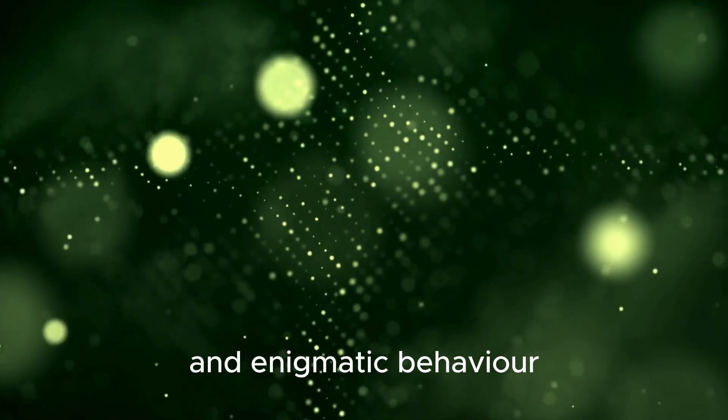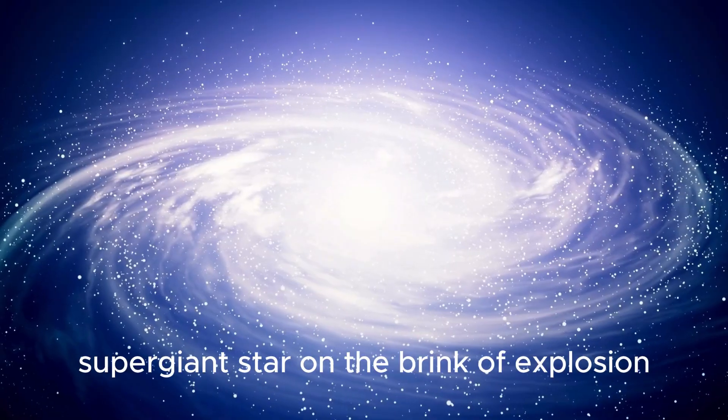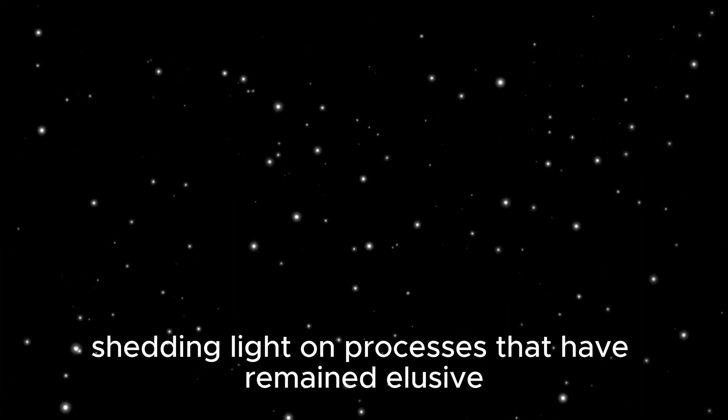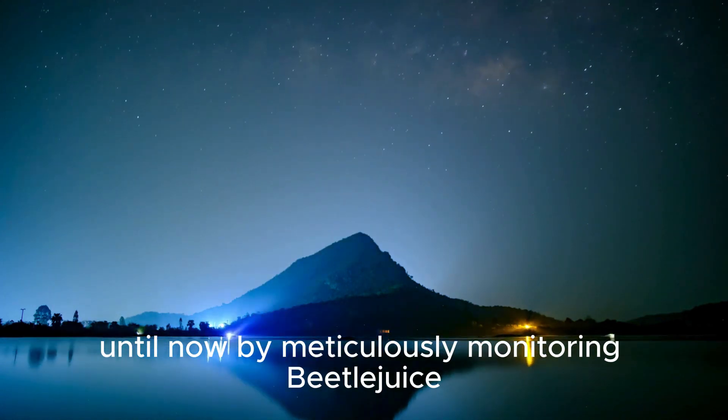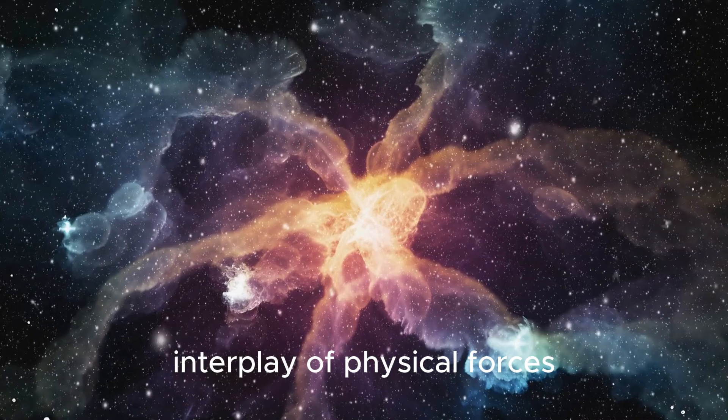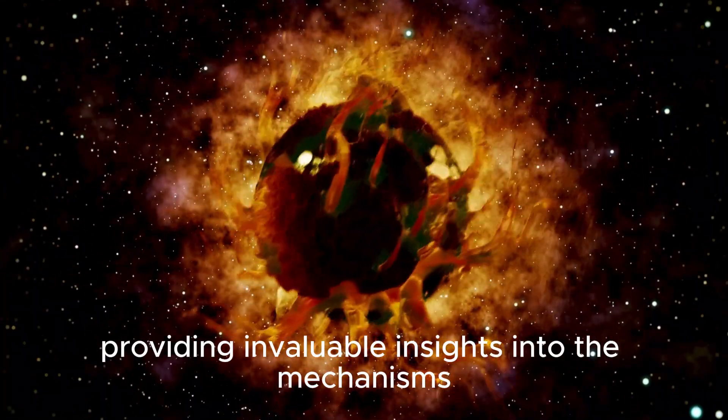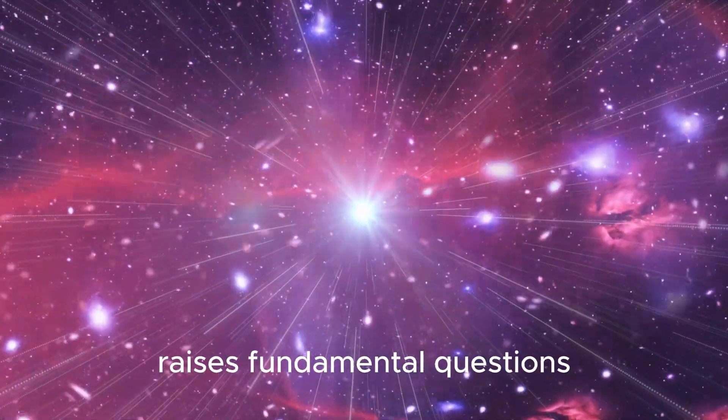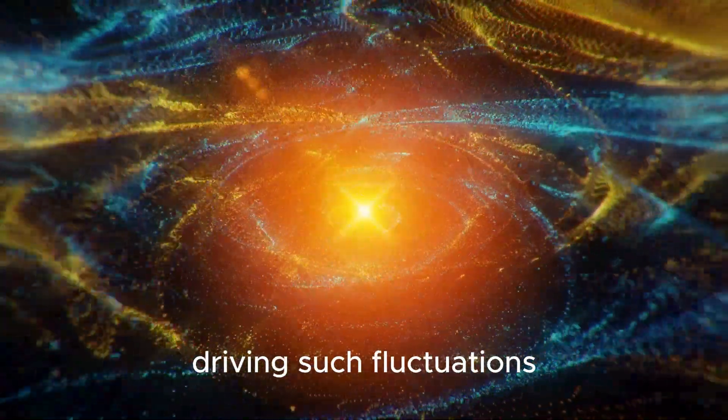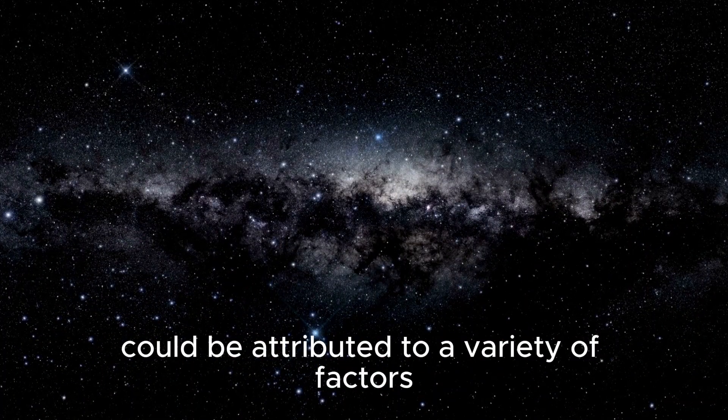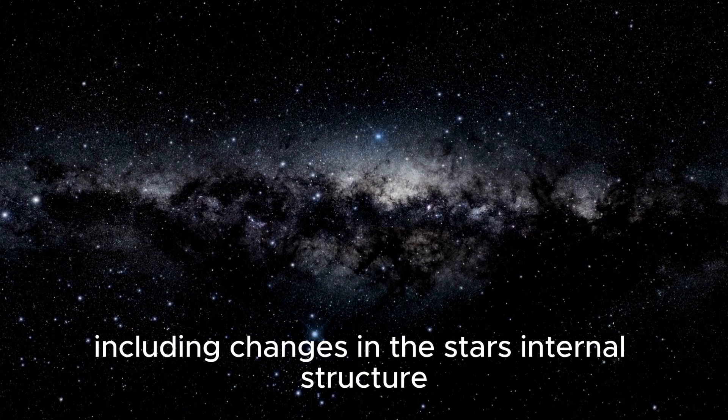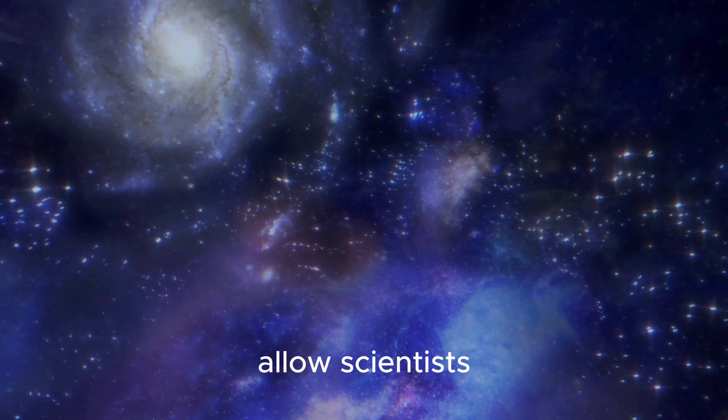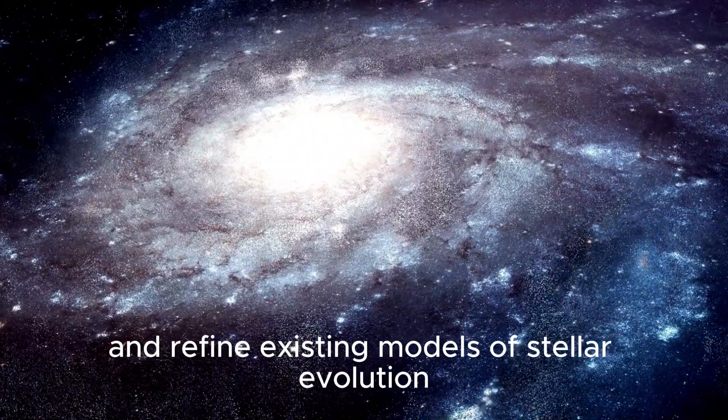Betelgeuse's unique characteristics and enigmatic behavior offer scientists a rare opportunity to study a red supergiant star on the brink of explosion. This presents a window into the final stages of stellar evolution, shedding light on processes that have remained elusive until now. By meticulously monitoring Betelgeuse, scientists can unravel the complex interplay of physical forces within dying stars, providing invaluable insights into the mechanisms governing their behavior. The variable brightness of Betelgeuse, a hallmark of its peculiar behavior, raises fundamental questions about the underlying mechanisms driving such fluctuations. These fluctuations could be attributed to a variety of factors, including changes in the star's internal structure, convection processes, or the presence of dark spots on its surface. Investigating these fluctuations allows scientists to deepen their understanding of stellar dynamics and refine existing models of stellar evolution.